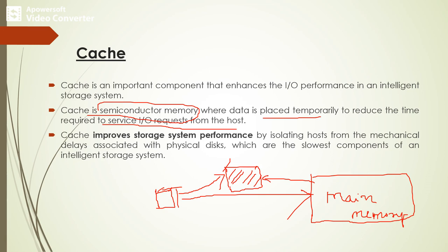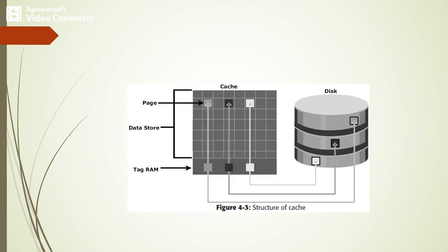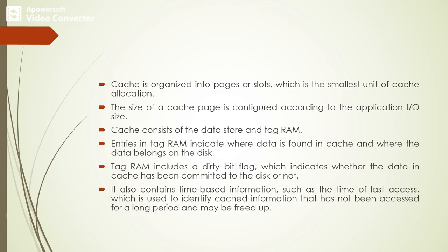Physical disks are the slowest components in an intelligent storage system. The cache structure consists of a data store as well as a directory. Cache is organized into pages or slots, which is the smallest unit of cache. The page size is variable depending upon the application's IO size. Each entry in the directory indicates where the data is found in cache and where the data belongs on the disk.